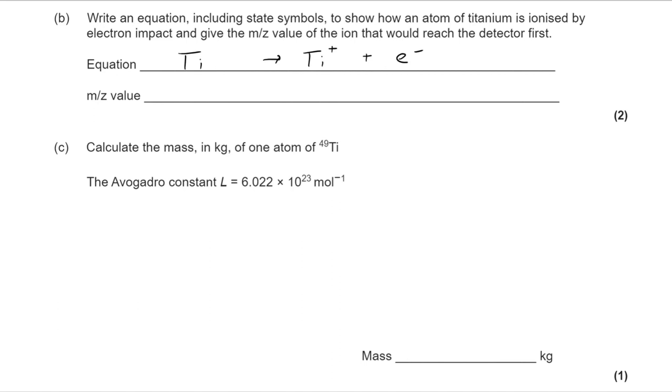In terms of the m/z value, we need to remember in the acceleration phase, all of the ions are accelerated to have the same kinetic energy. So it's going to be the smaller particles that move faster and therefore reach the detector first. And that's why we have the m/z value of 46.